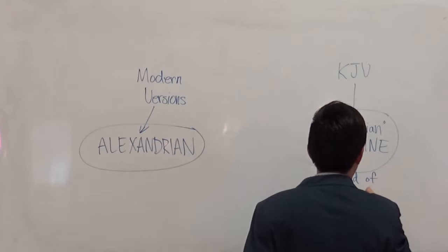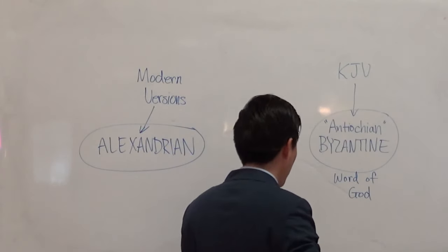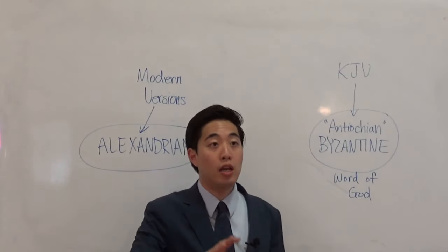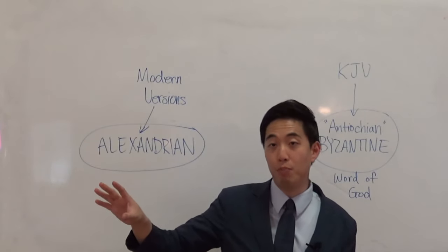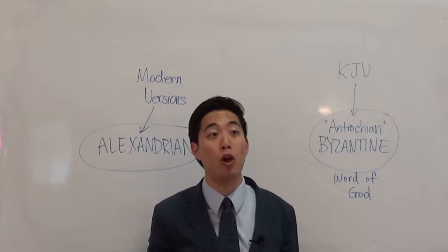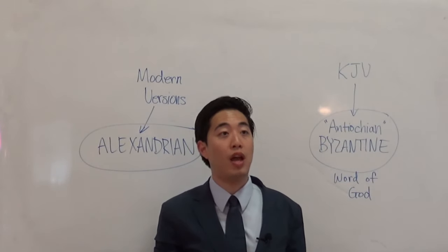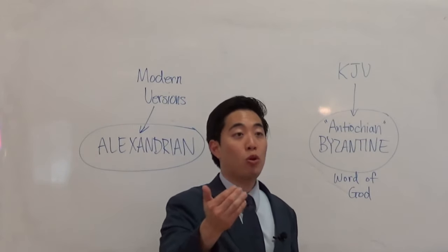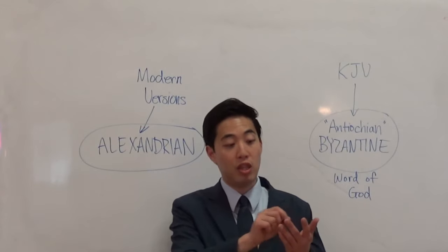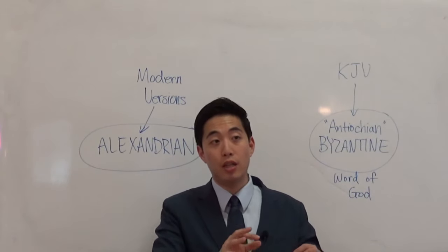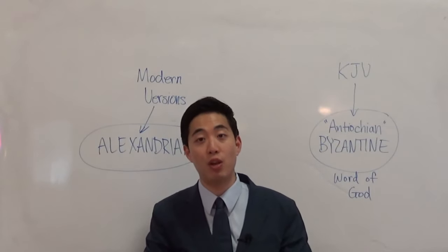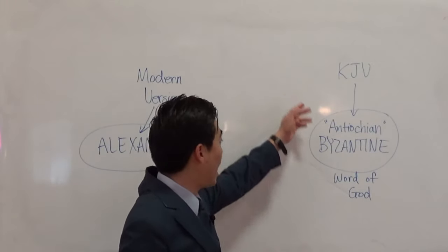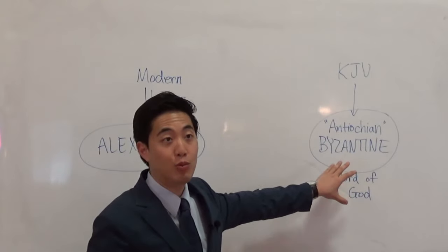What we King James Bible believers believe is that everything came from the Antioch Byzantine manuscript — that's where the Word of God came from. We believe what the apostles and prophets originally wrote had copies made from the originals, then translations of those copies, coming through the Antioch and Byzantine line.